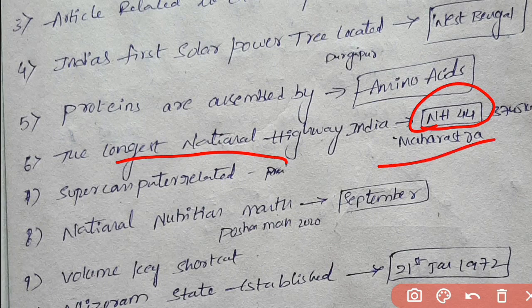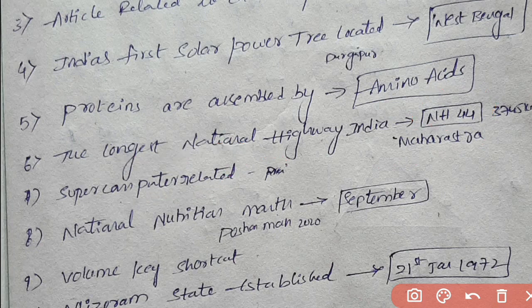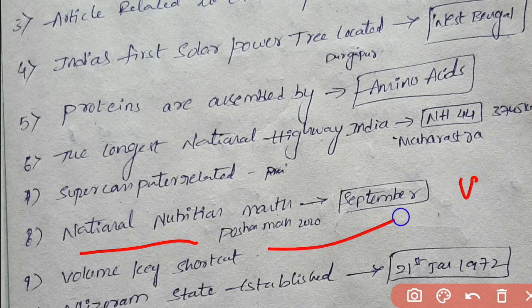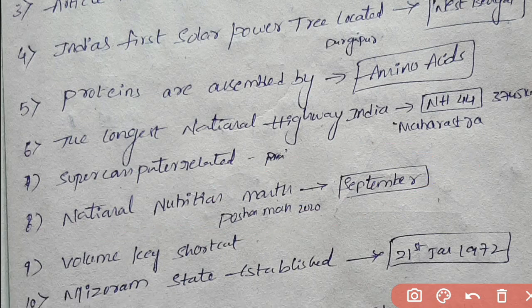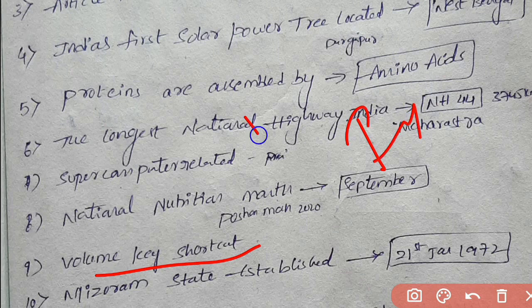Next question is supercomputer-related — not a particular problem. Next question: national nutrition month is September — this is a current affairs question. Next question is computer-related about volume shortcut keys; functional keys on the keyboard F1, F2 depend on the options. Next question: a major state established on 21st January 1975 — this is a tough question.